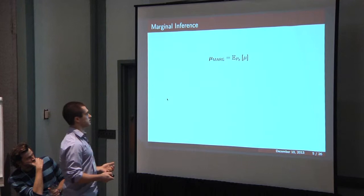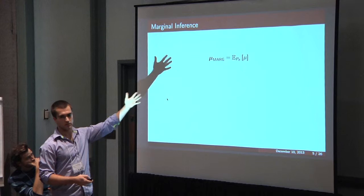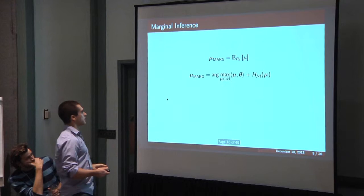Marginal inference is basically the task of finding the expected mu under the distribution encoded by that theta. The reason this is useful is that if you're doing maximum likelihood learning, the sufficient statistics are mu. So the expected sufficient statistics are something you do when you're doing maximum likelihood learning.